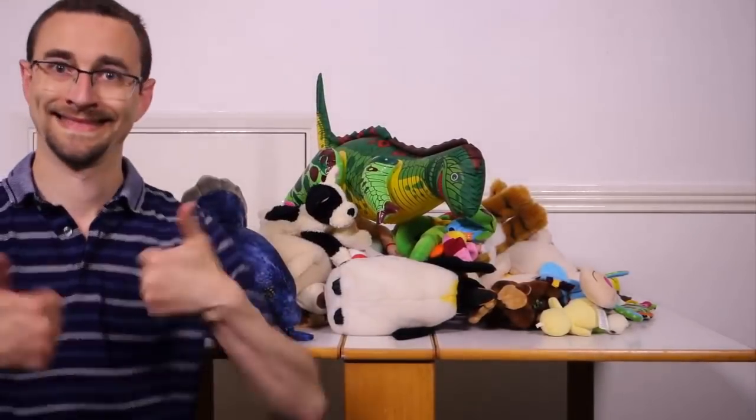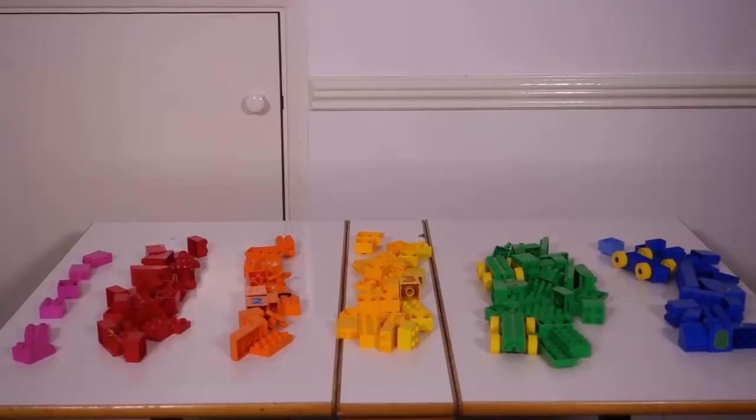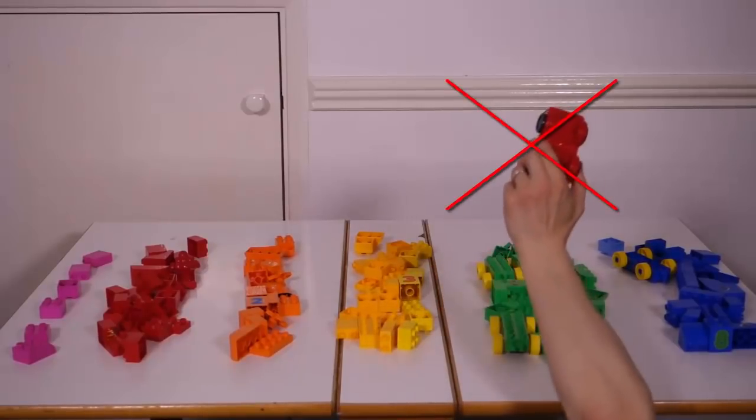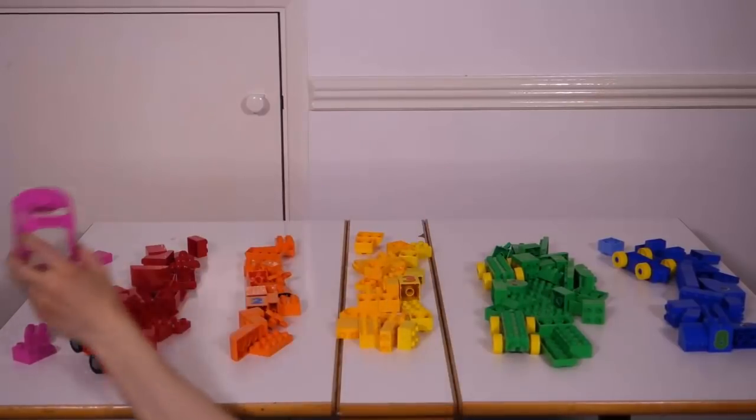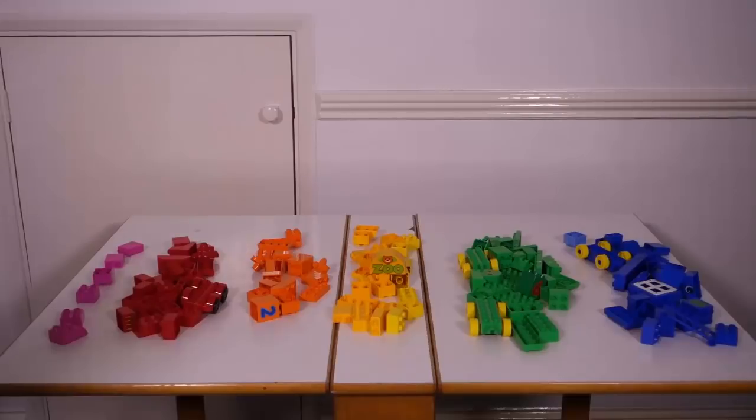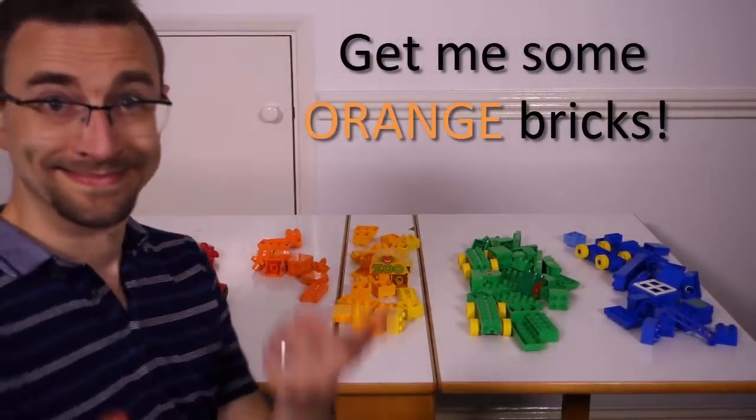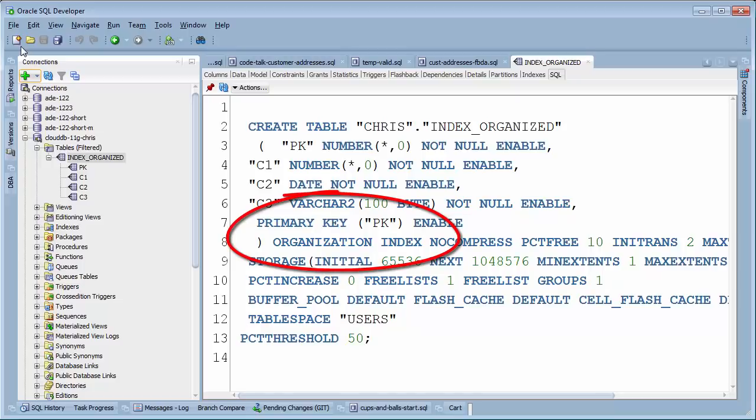My wife likes things to be neat and organized. Instead of stuffing things wherever there's room, everything has to go in the correct place. I hate this because it makes more work for me when I'm trying to store things, but it does make it much easier to find things sorted together. An index organized table works exactly like this. All the rows have to go in the correct place according to the primary key.